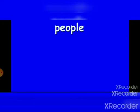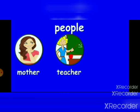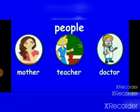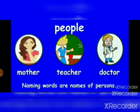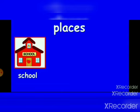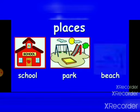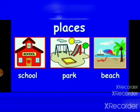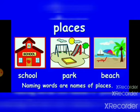People — mother, teacher, doctor. Naming words are names of persons. Places — school, park, beach.